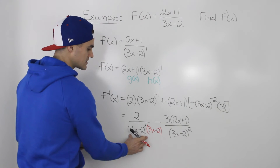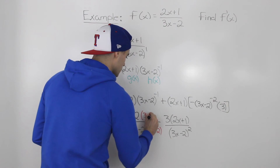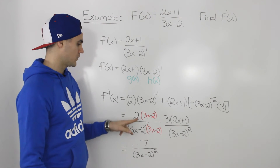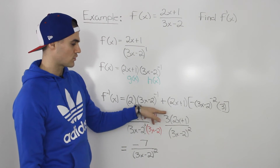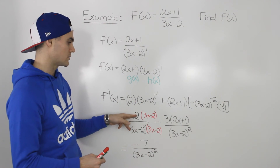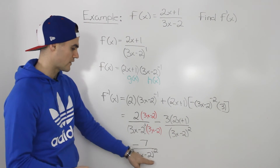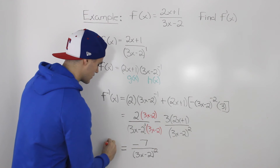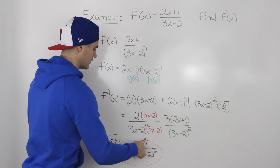Because we multiplied the denominator by 3x minus 2, we also multiply the numerator by 3x minus 2 as well. Simplifying the numerator, we distribute the 2 to get 6x minus 4. Then distributing the negative 3 inside the bracket gives us negative 6x minus 3. The 6x terms cancel out and we're left with negative 4 minus 3 in the numerator, which gives us negative 7, all over the common denominator of 3x minus 2 squared. This is the derivative of the original function — our final answer.